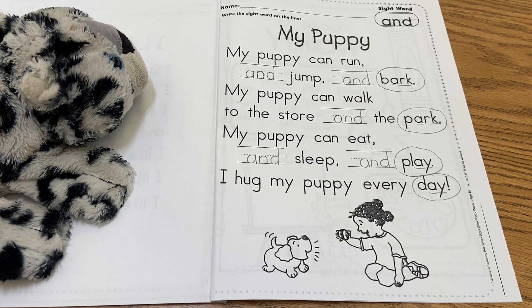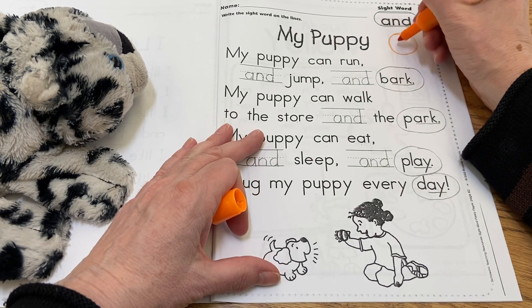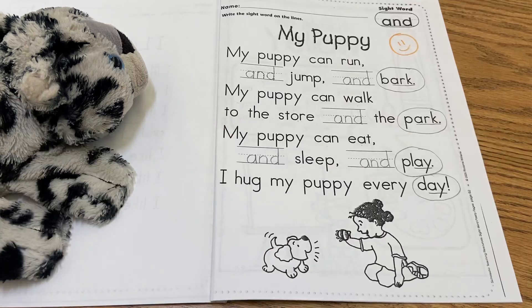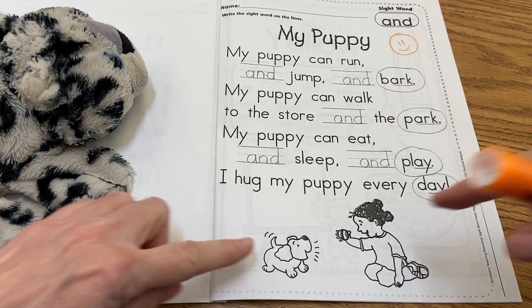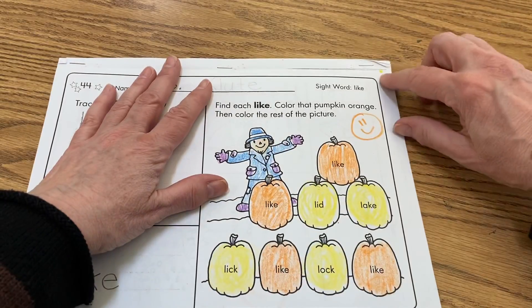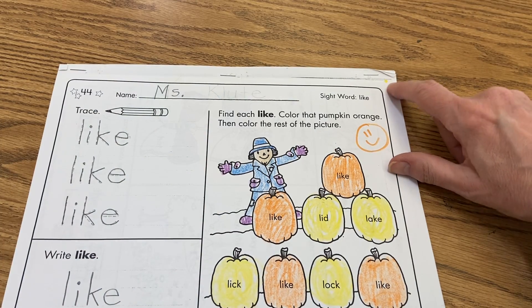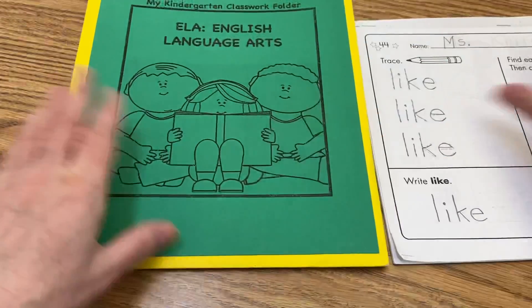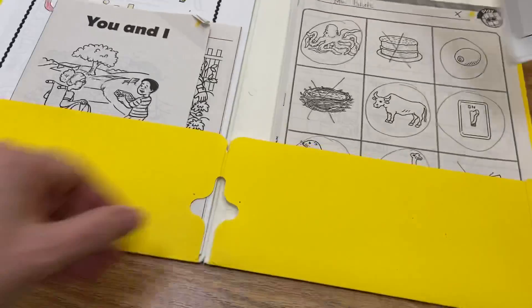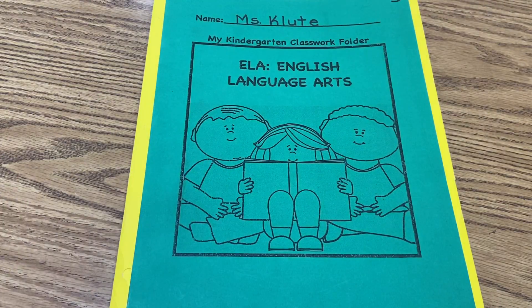So we're finished with our poem. You're going to give yourself your exit ticket right here. Good job on your puppy poem — and that puppy is so cute, right? So we're going to close this up. Yours should have a little yellow dot at the top, and that tells you it goes back into this yellow folder. And we're going to get ready for our next lesson.